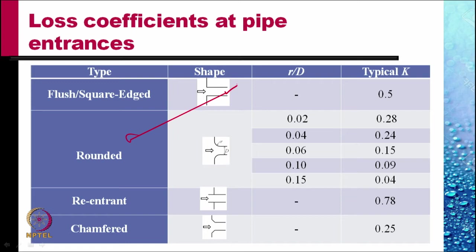When the entrance is rounded, the value of k depends upon R by D, the radius of the rounding and the diameter of the pipe, and for R by D varying from 0.02 to 0.15, the values of k are 0.28 to 0.04. The k value is 0.28 when the radius of the round is least and 0.04, a low value when the radius is large.